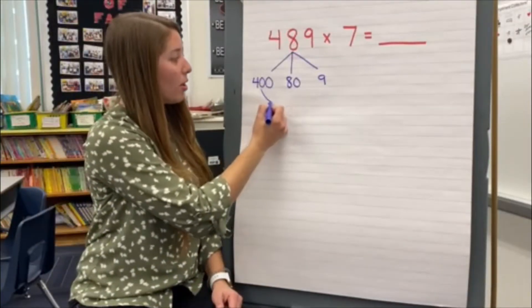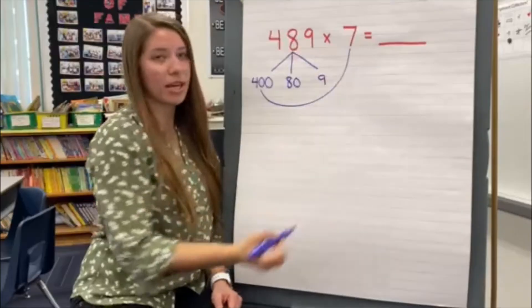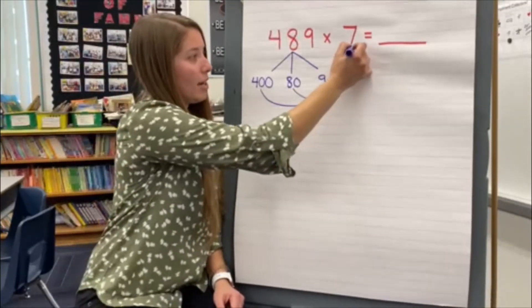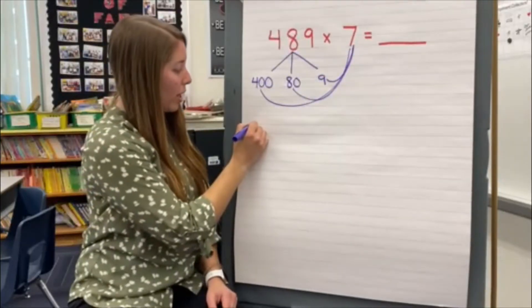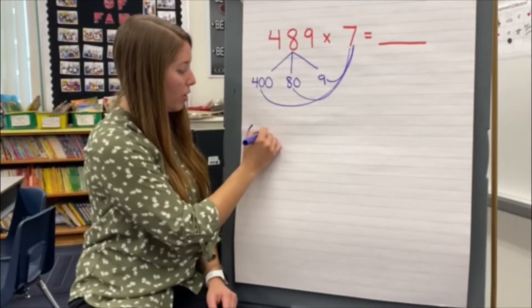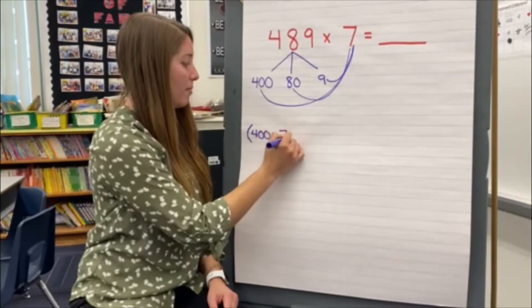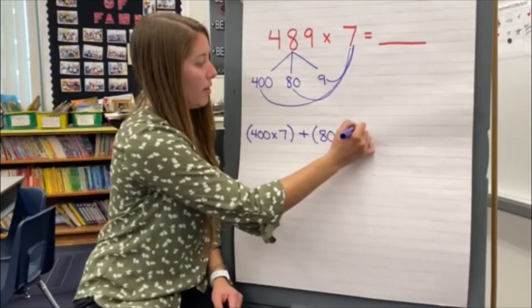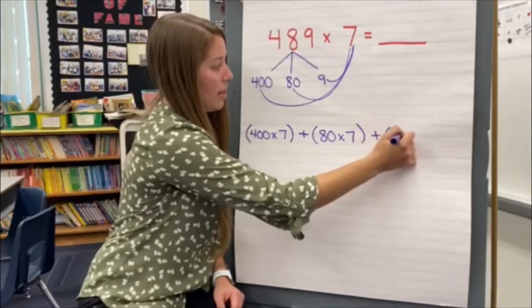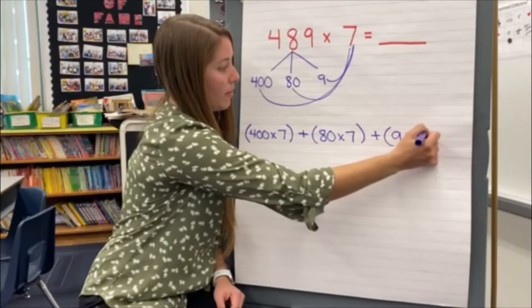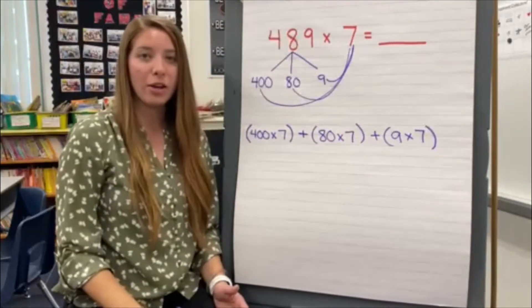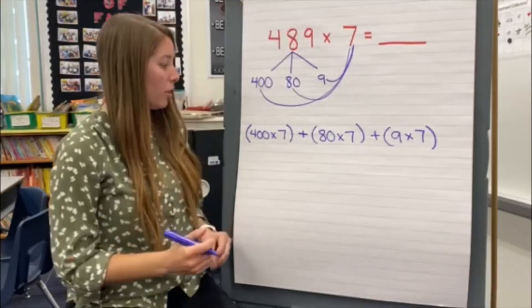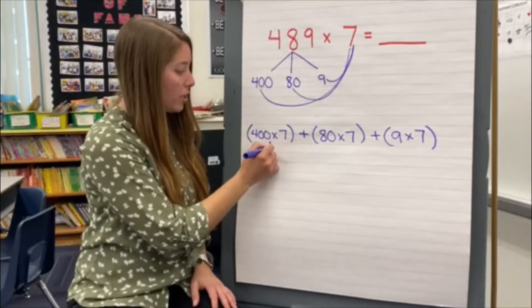Then we're going to do exactly the same strategy. This time we're going to start by multiplying 400 times 7, then 80 times 7, then 9 times 7. We put the addition symbols in there because once we multiply these, we're going to add them back together to find our total amount.